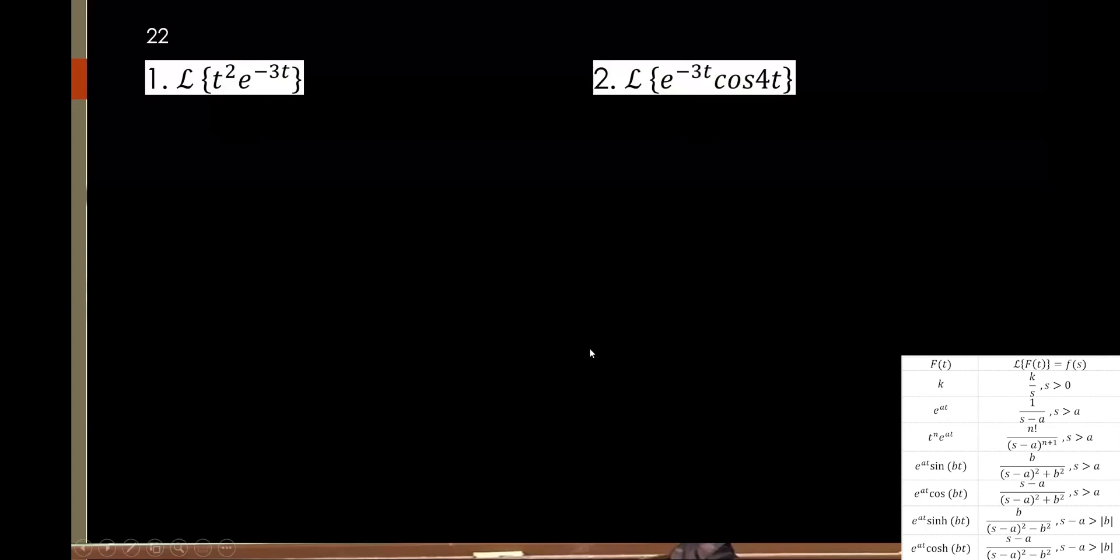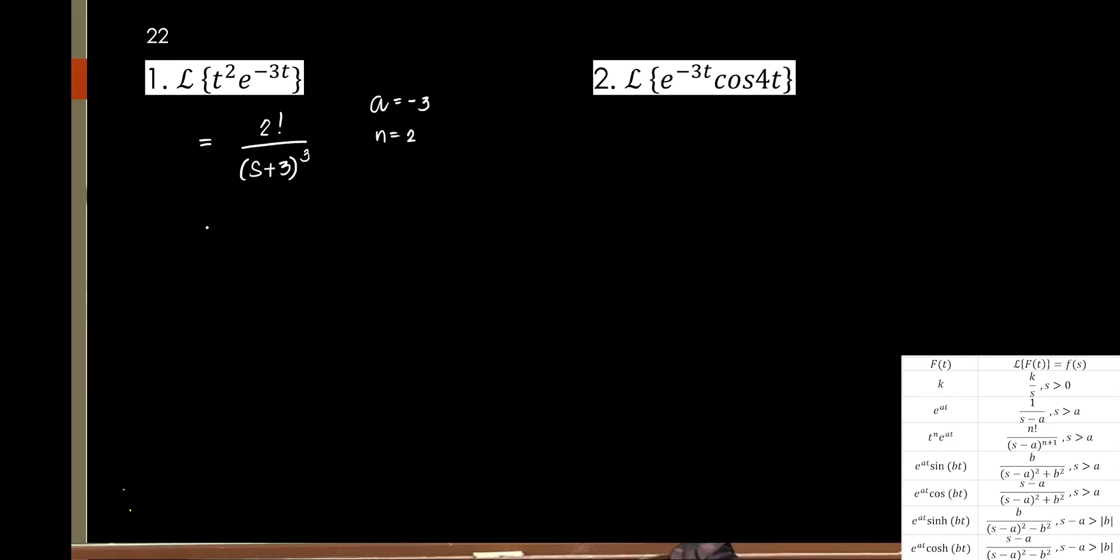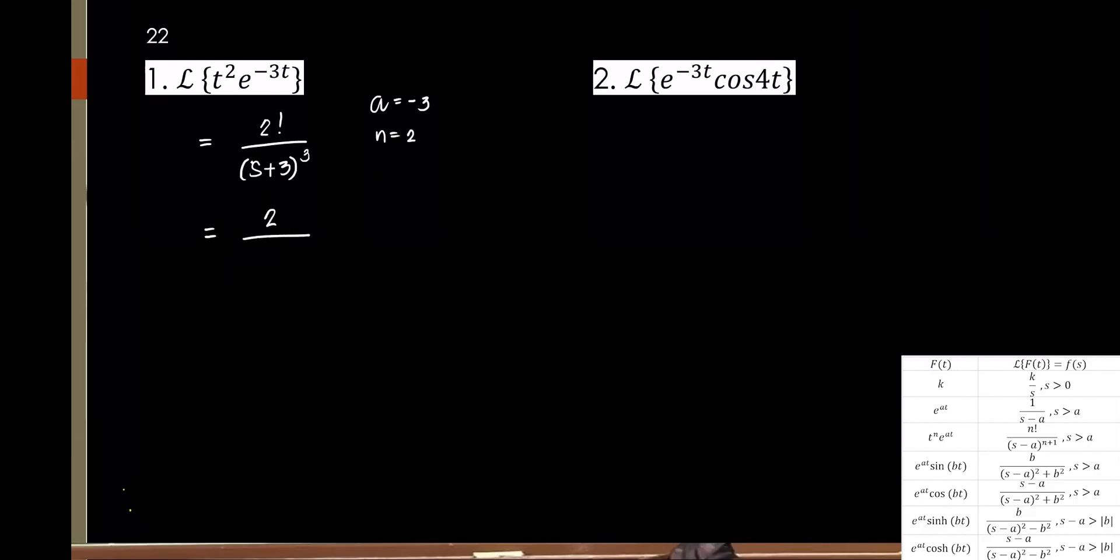Sige nga, let's try, guys. Okay. Write it. A is what? A is negative 3. Diba? N is 2. Be careful. So this one, that's simply 2. Because in your final answer, I don't want to see the factorials anymore. That is your final answer.